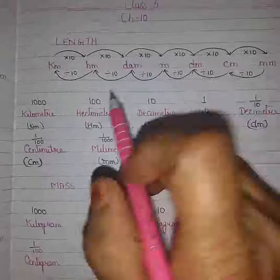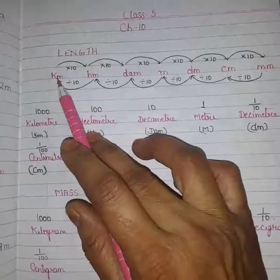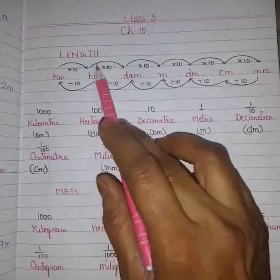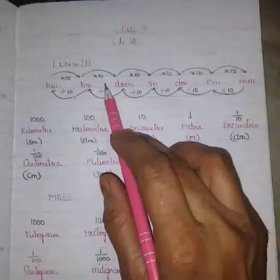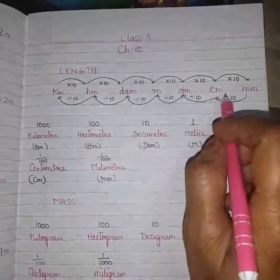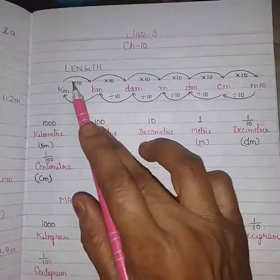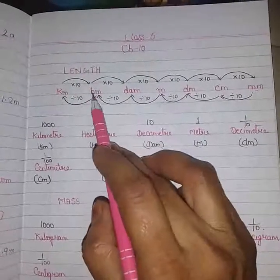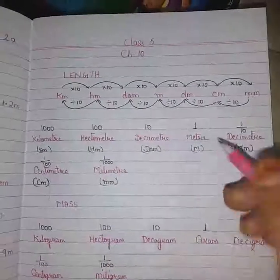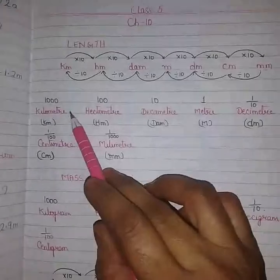Each and every unit is 10 times smaller than the bigger unit. So when we are moving from kilometer to hectometer, multiply by 10. Hectometer to decameter, multiply by 10. In this way, moving from left side to right side — or we may say bigger unit to smaller unit — multiply by 10. And if we are moving from smaller to bigger, then divide by 10. This is the basic rule to convert a unit from one to another.